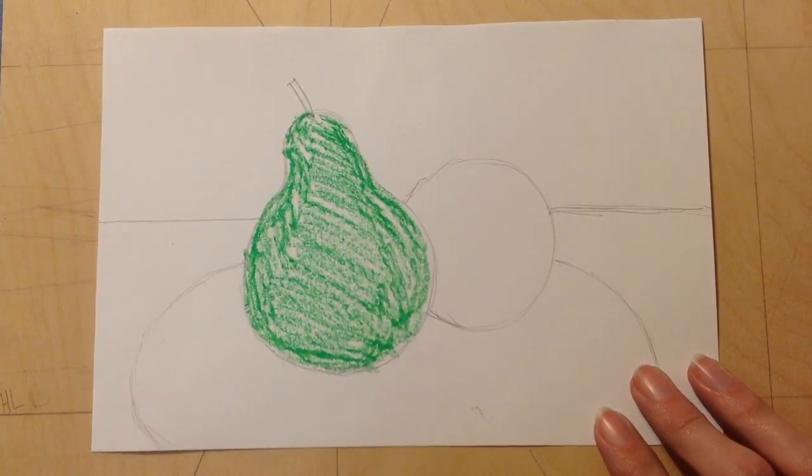Then, I want to think about where the light part of my fruit is. Now, if I have sunlight or a light bulb that's shining down on my fruit.